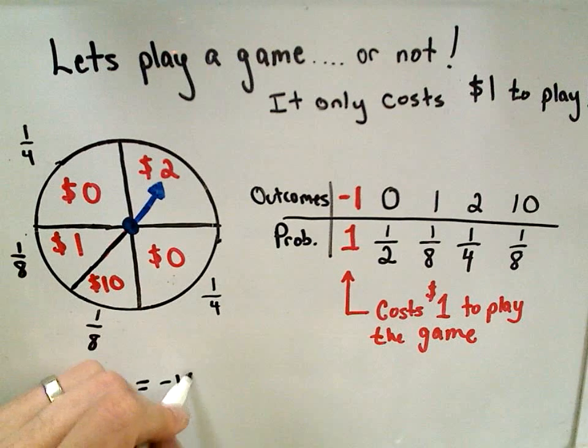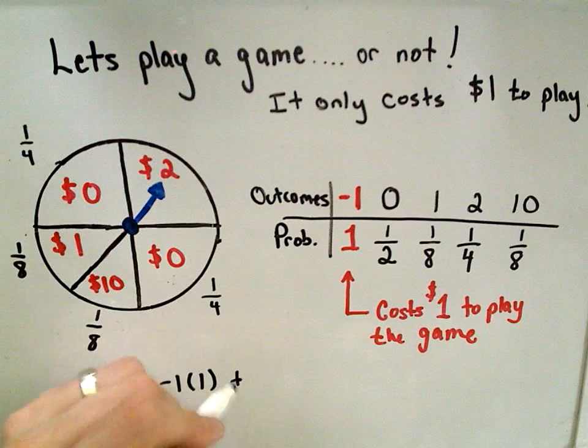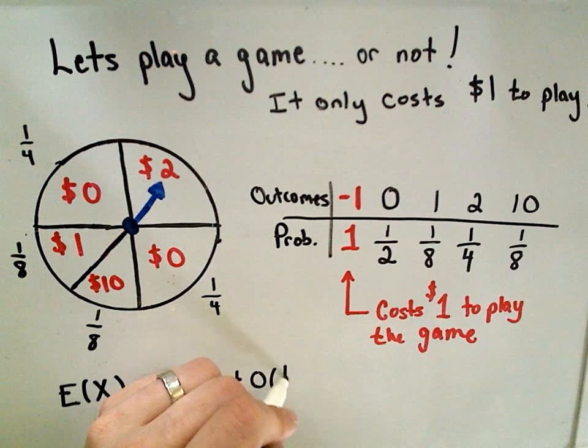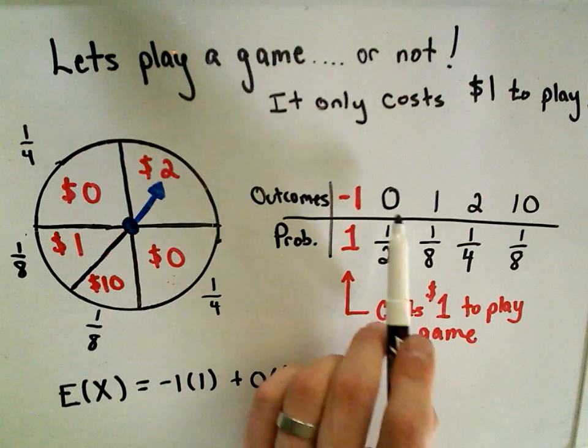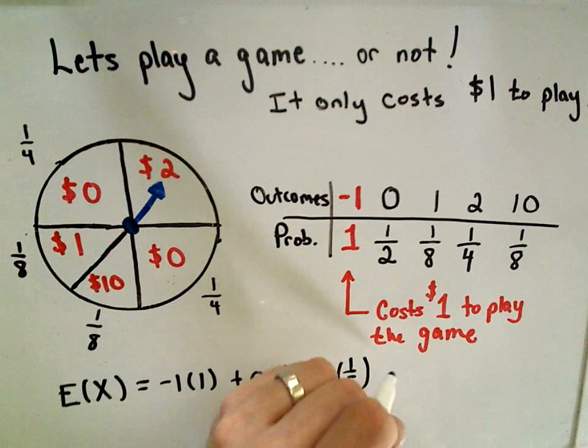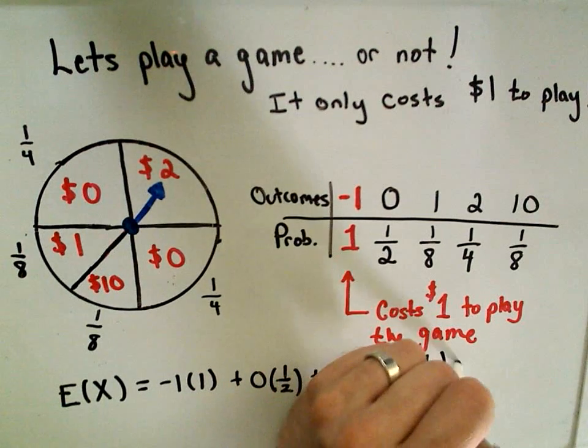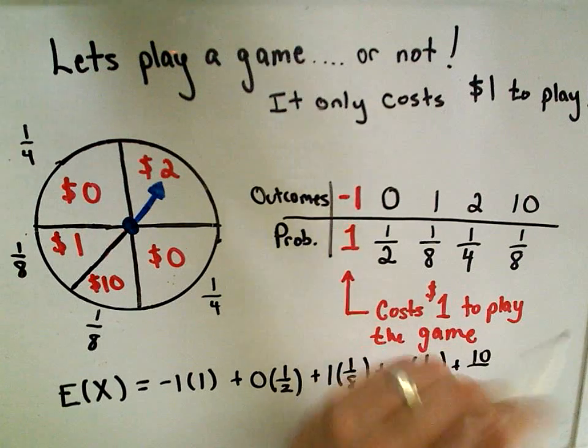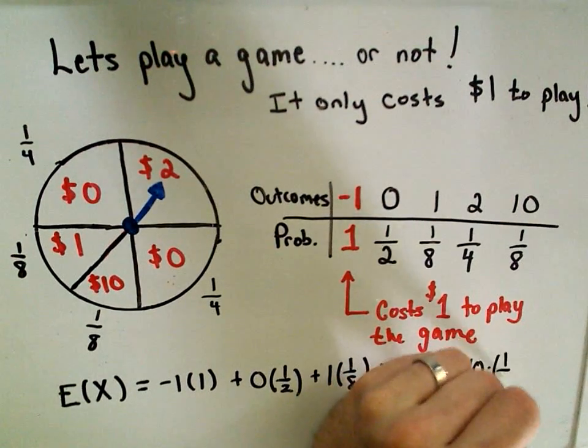It says we're going to lose $1 with 100% certainty. We add to that, we'll take 0 times one-half, so again, I'm just multiplying the outcomes by their probabilities, plus 1 times one-eighth, plus 2 times one-fourth, plus 10 times one-eighth.